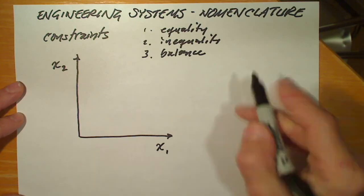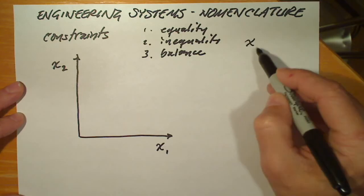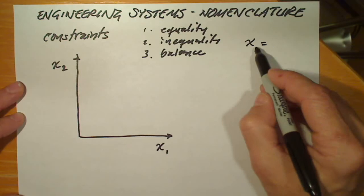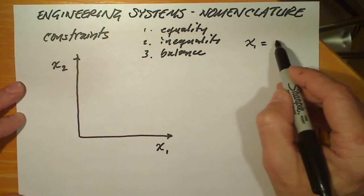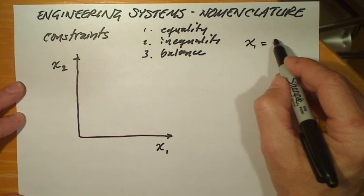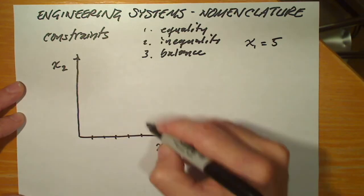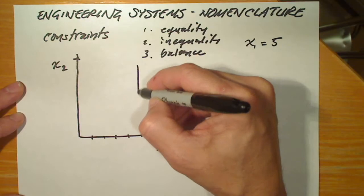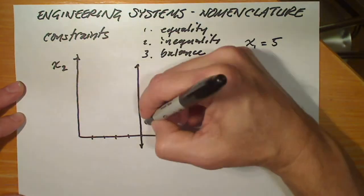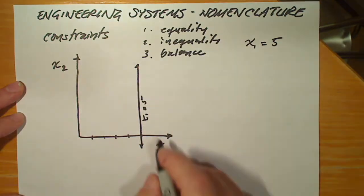An equality constraint would require something like x1 is equal to a value. We're going to call this value, just for the purposes of example, 5. If our solution has to lie on this line, x1 equals 5, it's a very narrow constraint.